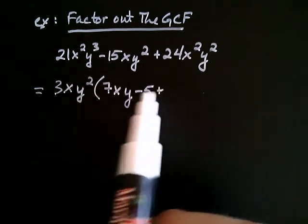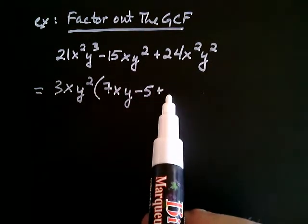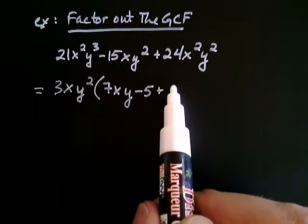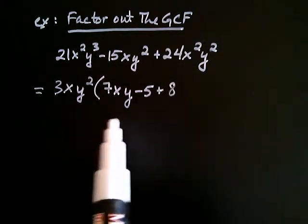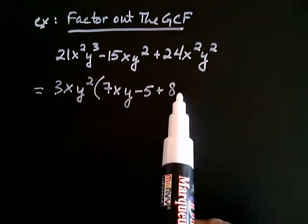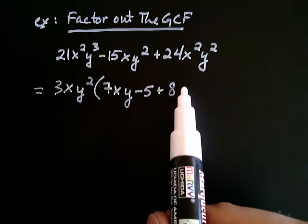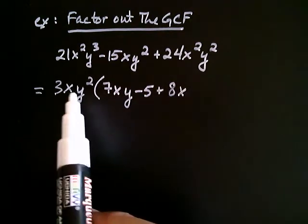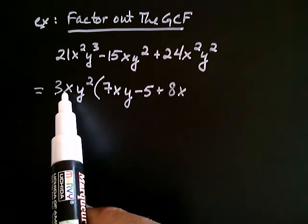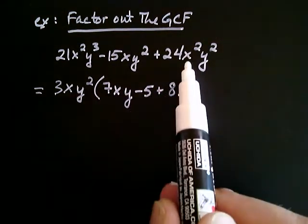What would I need here? Well, three times what will give me 24? That will be eight. Do I need any x's? Let me see, x times what? Well, if I have to get up to x squared, clearly I need one more x because this only supplies one x. So, x times x is how I'm going to get x squared.